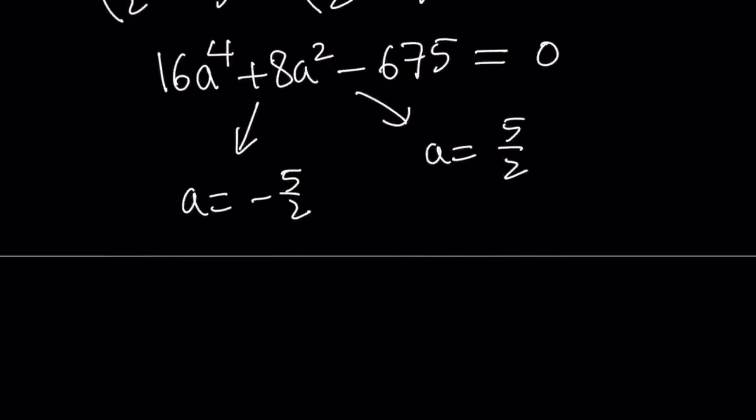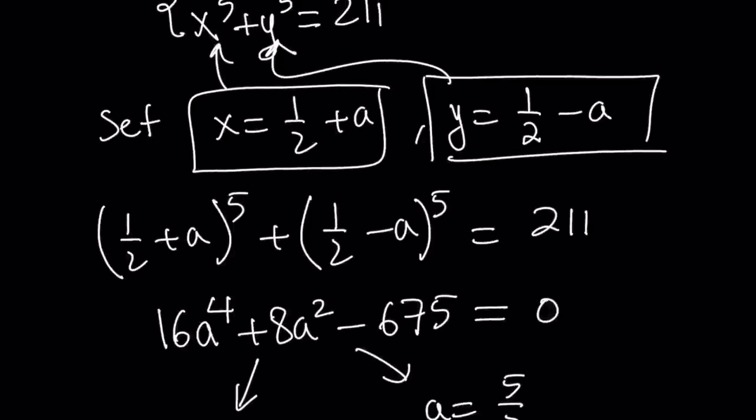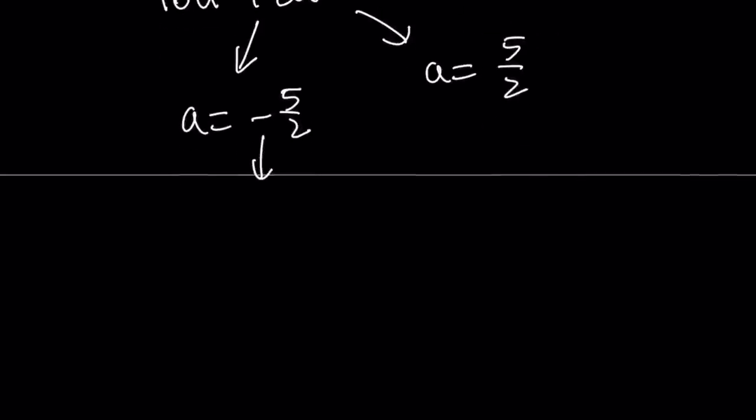And then obviously the others are easy to find. But anyways, a equals negative 5 halves means what? It means x equals 1 half plus a, remember? So you're just going to add 1 half minus 5 halves. That's going to be negative 4 halves, which is negative 2.